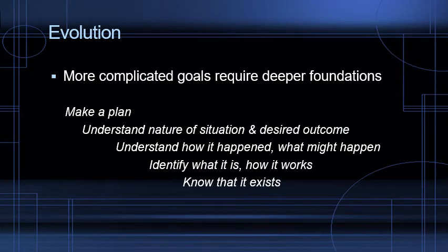More complicated goals require deeper foundations. You can't make a plan about what to do if you don't know that something exists, or more simply, you can't make a plan about how to respond to a situation if you don't understand the nature of that situation and what your desired outcome is. You can't understand that unless you understand how it came about and what might come from it. And obviously the first stage is just knowing that it exists — for example, something like racial bias in drug conviction rates must be established as a pattern before any plans can be made.